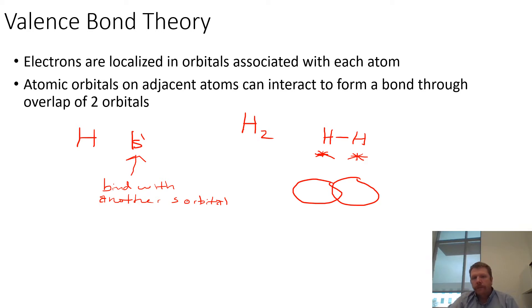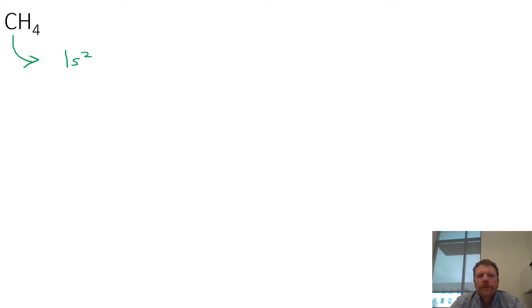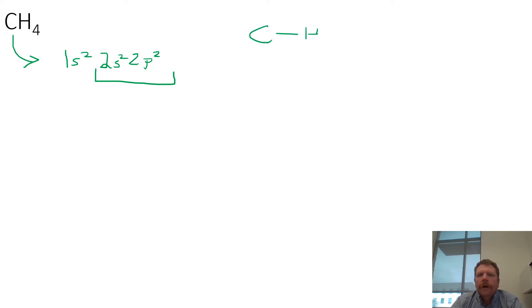When we look at bonding of more complicated molecules and we have a more complicated scheme with respect to where the electrons are going to be found — for example CH4 — what we need to do is first remember our electron configuration for carbon. Carbon is 1s2, 2s2, and 2p2. The valence electrons for carbon are these. We have a carbon-hydrogen bond forming, and we need to figure out how that can actually take place.